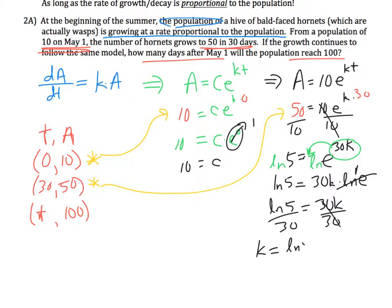I end up with ln(5) equals 30k, divide by 30, and we've got k equals ln(5) over 30. I'd like us to get in the habit of just using that exact value. For the sake of discussion, if you want a number, that's 0.0536, but I'd say we really should just keep this entire value and use that.